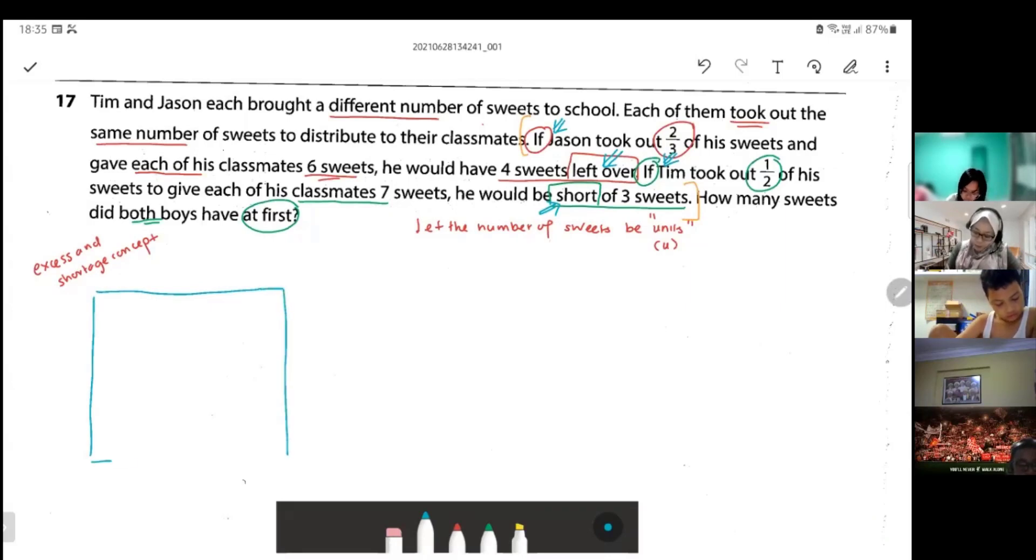Like that. Then we cut up into three columns. We put the if, excess or shortage, total - Jason and Tim. Following who comes first. They say Jason first, I have to follow Jason first.